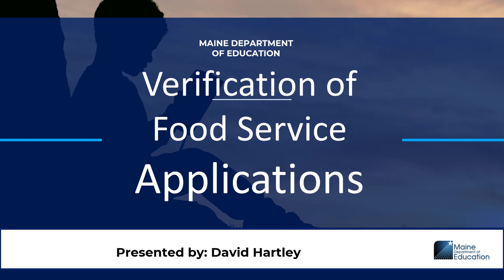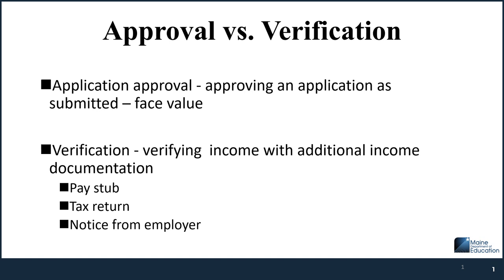You receive applications and the applications, when you receive them, are approved based on face value — they record what they say their income is. You use that to make the determination of whether it's approved for free or reduced or whether it's denied. During the verification process, the family has to send you additional income to validate what they say they make. They can send you pay stubs, tax returns, or a notice from their employer stating how much they make, and this all has to be as current as possible information.